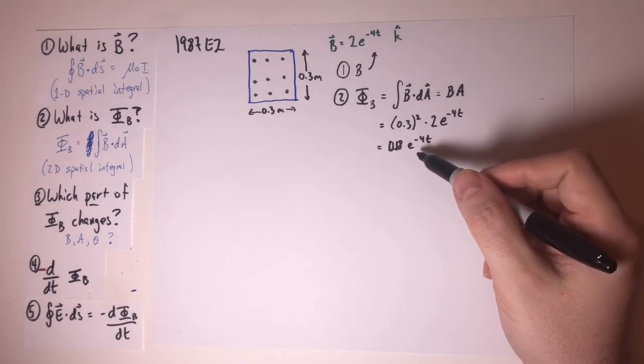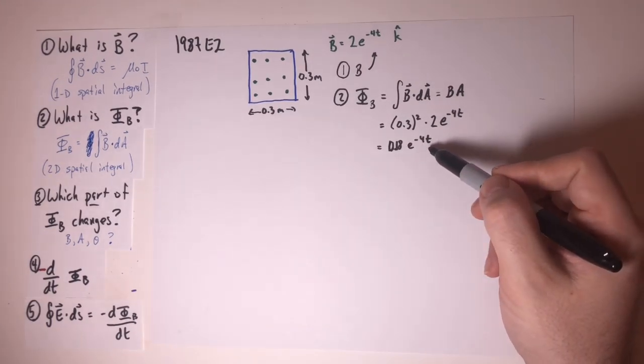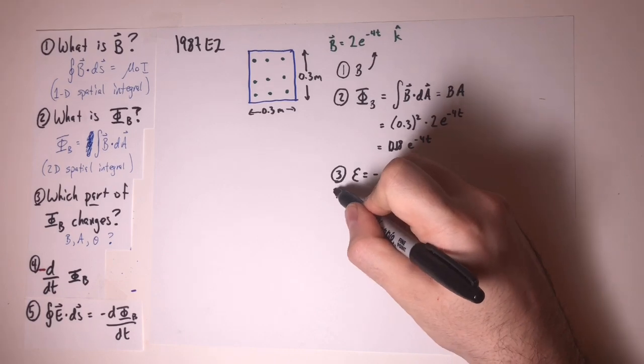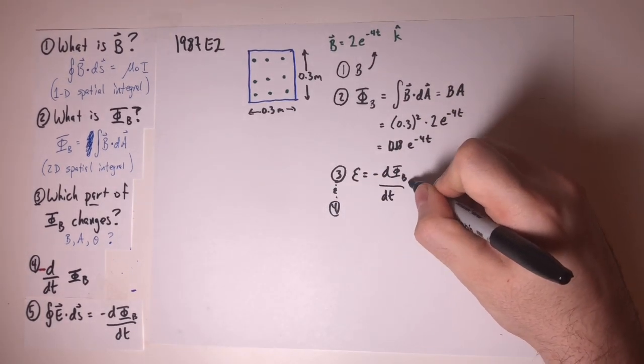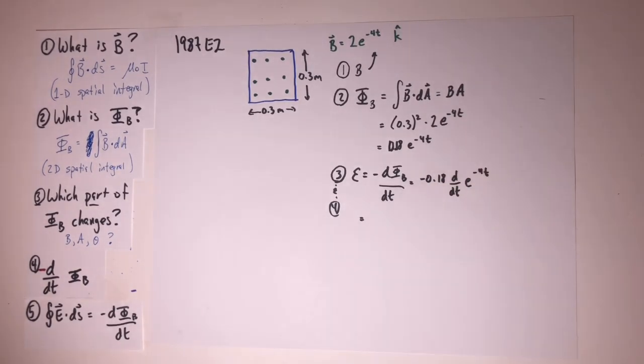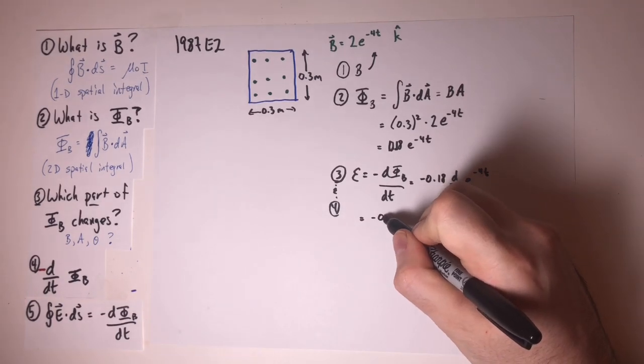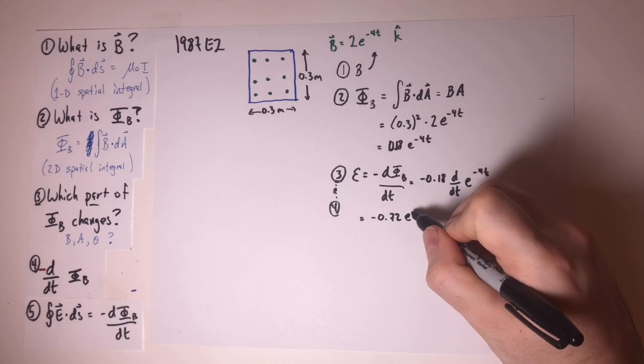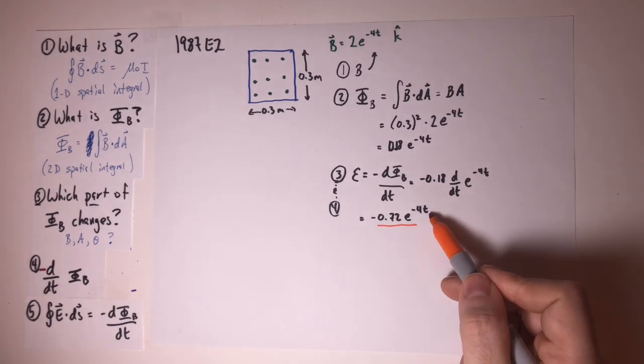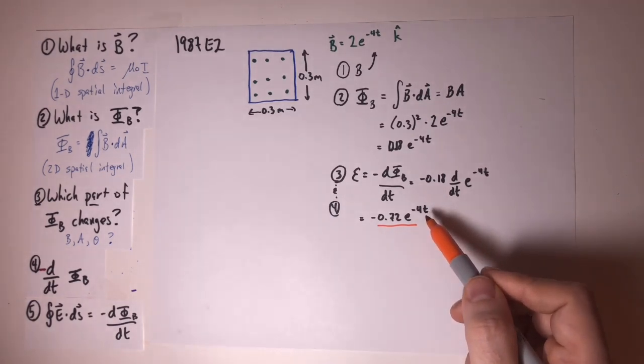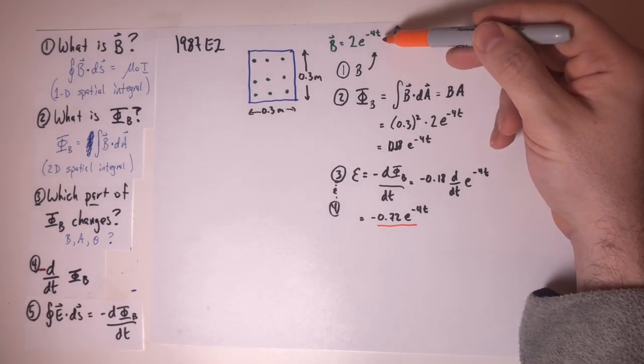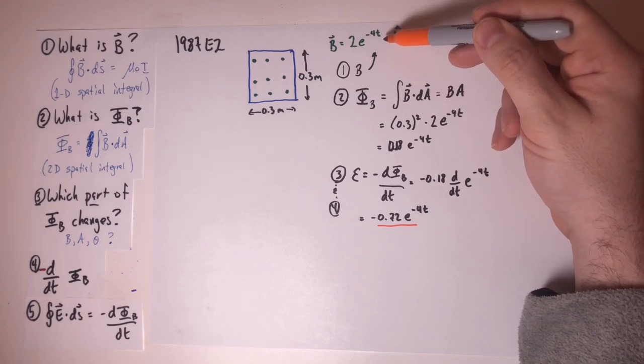It's also pretty obvious which part of the flux is changing. It's this exponential part of the magnetic field expression. Notice that this expression does still vary with time. That's because unlike some examples that you've seen previously, this magnetic field is not constantly changing with time. In fact, its rate of change is changing as characterized by exponentials.